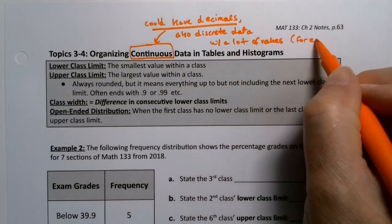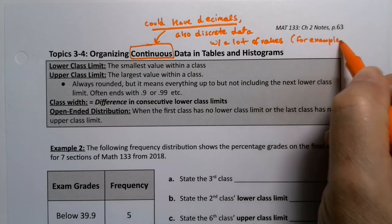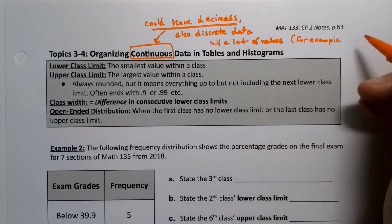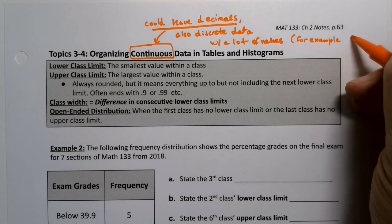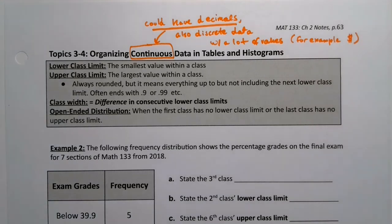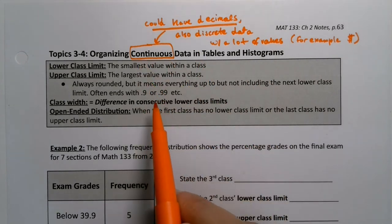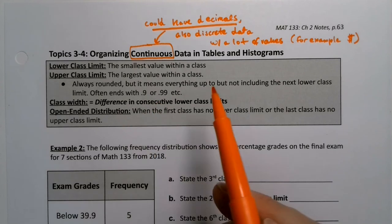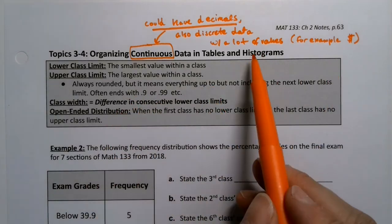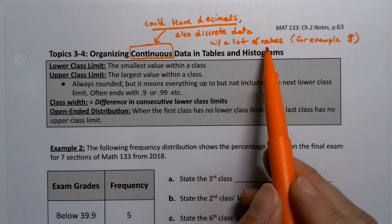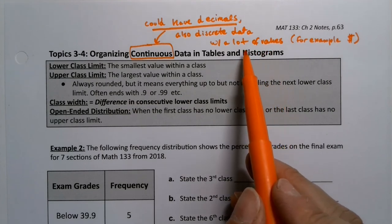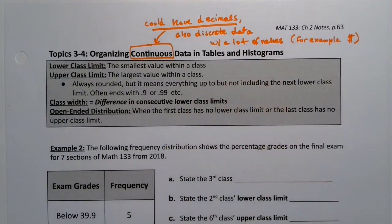For example, money. Money stops at the hundredths place for the cent, for the penny. But even though it's technically discrete, we don't ever treat it like it's discrete. We would always put it in a table and treat it like it's continuous because it does take on decimal values. So it's annoying to work with it as a discrete thing when it takes on a lot of values and there's a huge range. It's just easier to put things into groups, which we call classes.